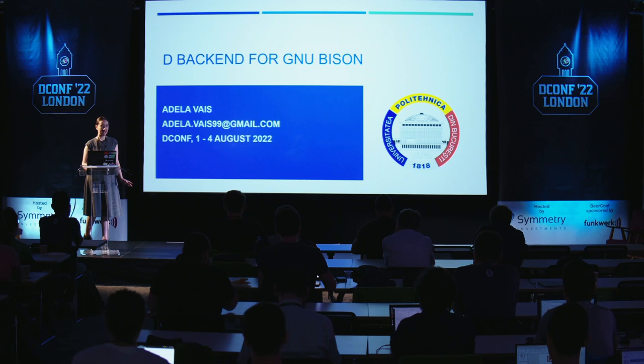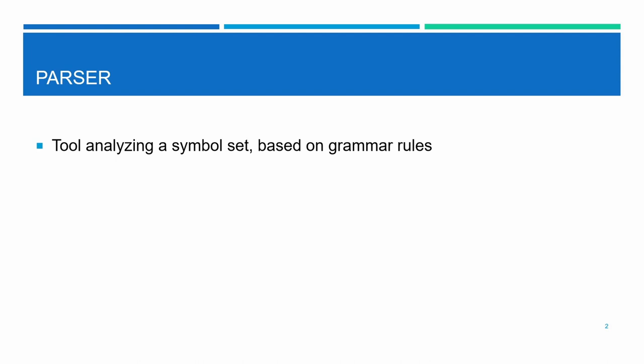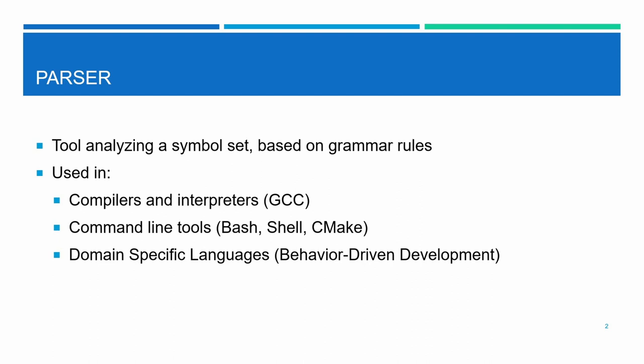As most of you might know, GNU Bison is a parser generator, but let's first make sure we all agree on what a parser is. A parser is a tool — it analyzes a symbol set based on some grammar rules and is used in all sorts of contexts: compilers, interpreters, command line tools, and nowadays in domain-specific languages, especially in behavior-driven development.